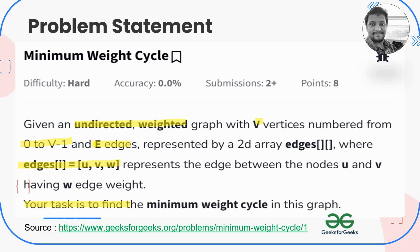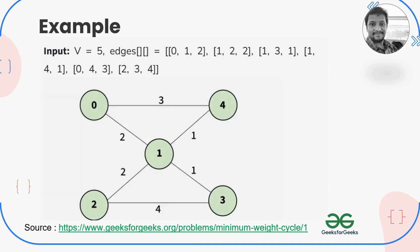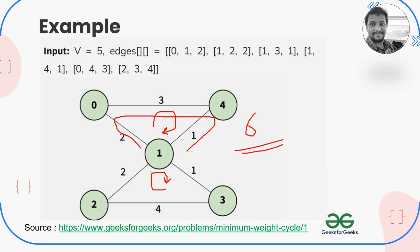Our task is to find the minimum weight cycle from the given graph. Let's go through one example. We have two cycles here. The top cycle has a total cost of 2 plus 3 plus 1, which is 6. The bottom cycle has a cost of 2 plus 4 plus 1, which is 7. So the answer here is 6, since it is the minimum cost.